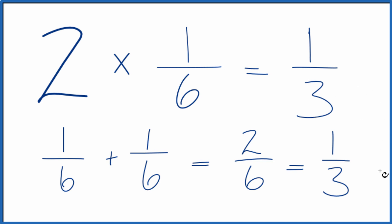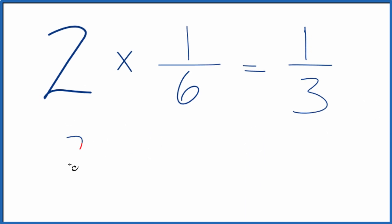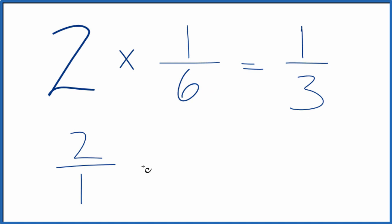There is another way we could do this. We could take two, call this two over one, and then we'll multiply times one-sixth. Two divided by one, it's still two, but now with fractions we multiply the numerators, then the denominators.